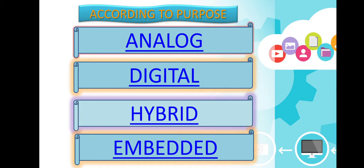According to the purpose, operations performed, and methods used to store and process data, computers can be classified into the following categories: analog computer, digital computer, hybrid computer, and embedded computer.